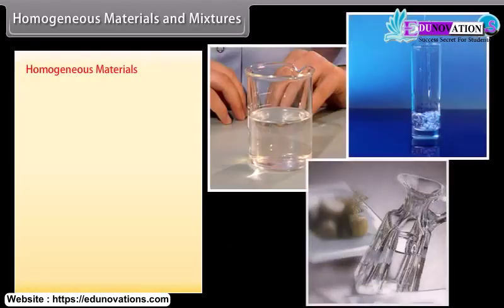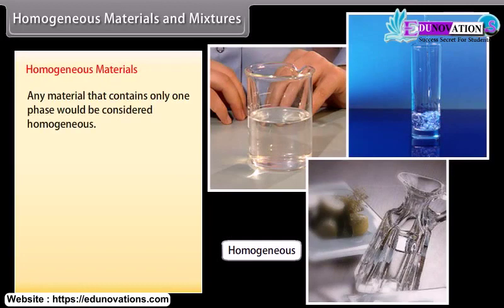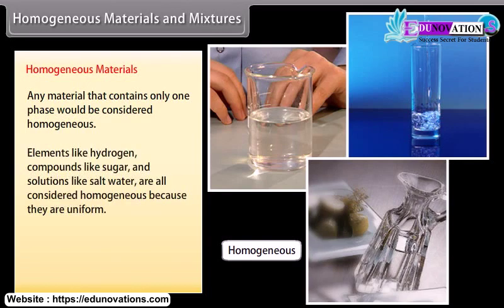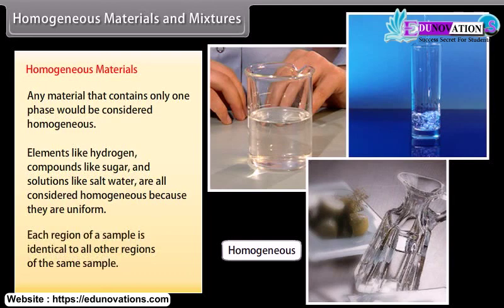Any material that contains only one phase would be considered homogeneous. Elements like hydrogen, compounds like sugar, and solutions like salt water are all considered homogeneous because they are uniform. Each region of a sample is identical to all other regions of the same sample.